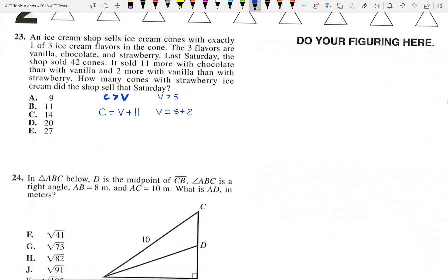And it told us that in total they sold 42 cones. So that's going to be chocolate plus vanilla plus strawberry is equal to 42. Now I can't solve this unless it's all in terms of a single variable.